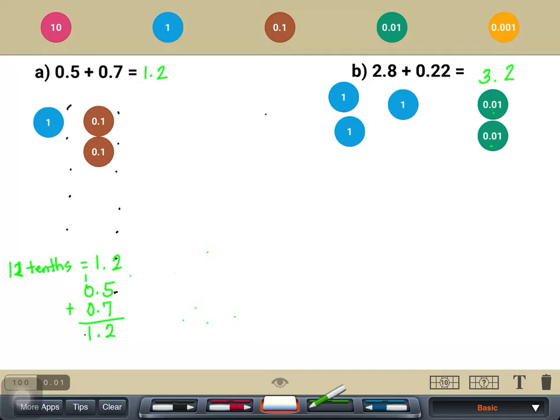If I'm going to show it using the arithmetic, that would simply be 2 and 8 tenths plus 22 hundredths. Once again, please notice how I placed the numbers should be aligned, the place value should be aligned. And if it would help you, you can always put a 0 placeholder right there so that you won't get confused.